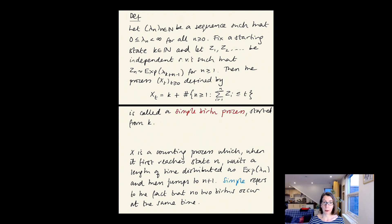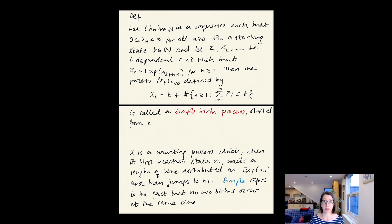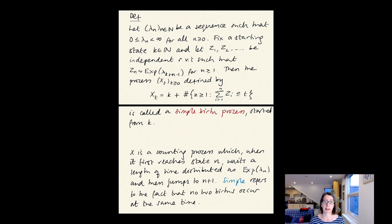So x is a counting process which, when it first reaches state n, waits a length of time distributed as exponential lambda_n, and then jumps to n+1. Here the parameter lambda_n refers to being in state n rather than the nth jump made, because we started in some general state k. The word 'simple' refers to the fact that no two births occur at the same time.